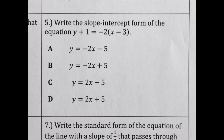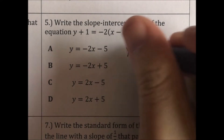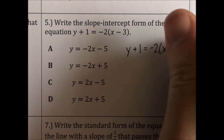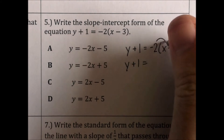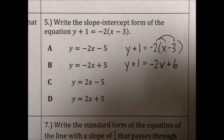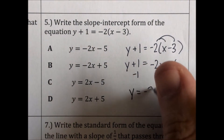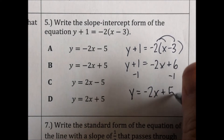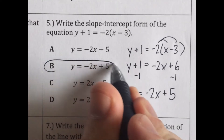Write the slope-intercept form of the equation y plus 1 equals negative 2 parenthesis x minus 3. Slope-intercept form — the y needs to be alone. So after we distribute the negative 2, we get negative 2x plus 6. We subtract 1 from both sides and the y will be alone: y equals negative 2x plus 5. That's choice B.